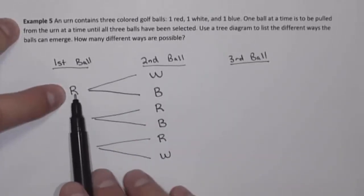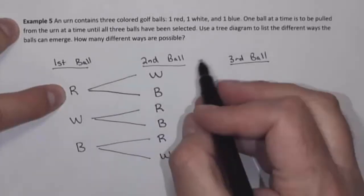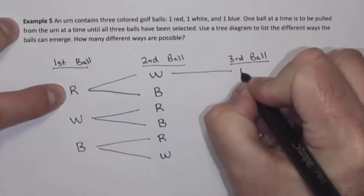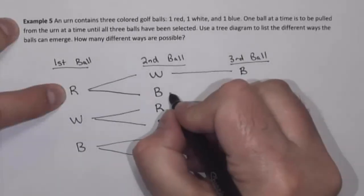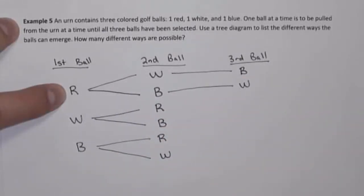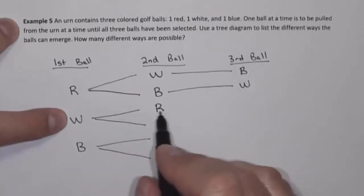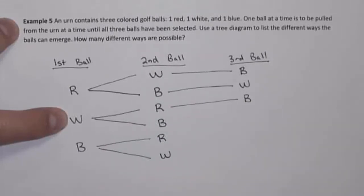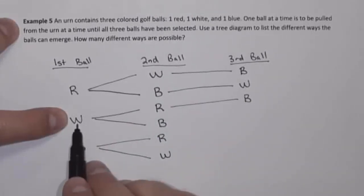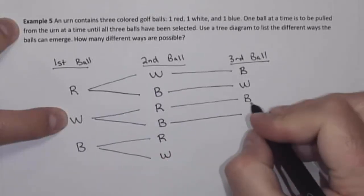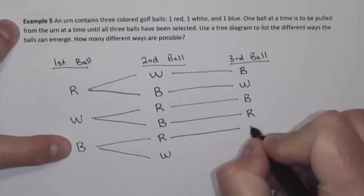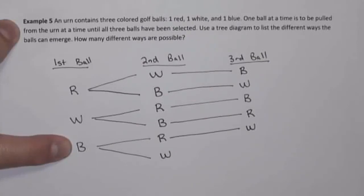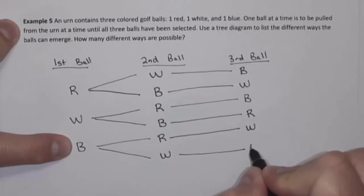If the first ball is red, then for the second ball there are only two possibilities: white or blue. If the first ball is white, the second could be red or blue. If the first ball is blue, the second could be red or white. For the third ball, only one ball remains: if first was red and second was white, the third must be blue, and so on — only one choice remains each time.